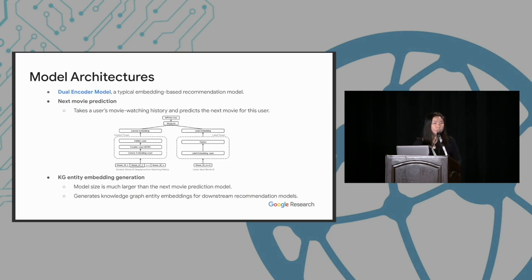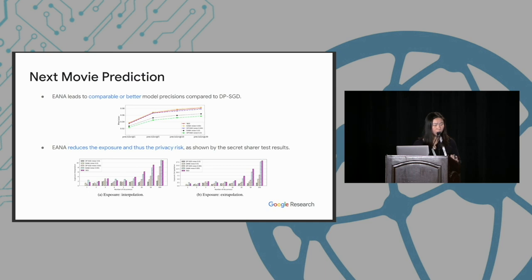And for the model architectures, we use the dual-encoder model, which is a typical embedding-based recommendation model. This is for the next movie prediction task. For this task, we take a user's movie watching history and try to predict the next movie for this user. So for the KG entity embedding generation, we also use a similar model architecture, but the key point is the model size is much larger compared to the next movie prediction model. And for the KG entity embedding generation task, we actually generate the knowledge graph entity embeddings for downstream recommendation models.